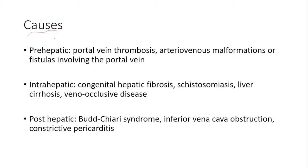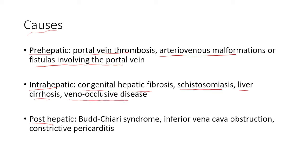Causes of portal hypertension include pre-hepatic, intra-hepatic, and post-hepatic. Pre-hepatic causes include portal venous thrombosis and arteriovenous malformations or fistulas involving the portal vein — everything before the liver. Intra-hepatic causes include congenital hepatic fibrosis, schistosomiasis, liver cirrhosis, and veno-occlusive disease. Post-hepatic causes involve problems in the hepatic vein or inferior vena cava, such as Budd-Chiari syndrome, hepatic vein thrombosis, inferior vena cava obstruction, or constrictive pericarditis.